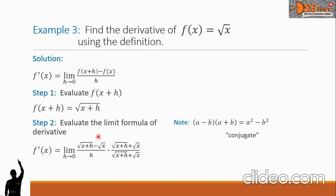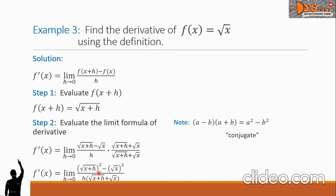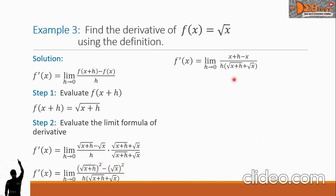Multiplying the two fractions, we apply the special product formula in the numerator, and combine both denominators. This gives the limit of the square of the quantity square root of x plus h, minus the square of the square root of x, all over h times the sum of the two radicals. Cancelling the squares and radical signs, we get the limit of x plus h minus x over that same denominator.